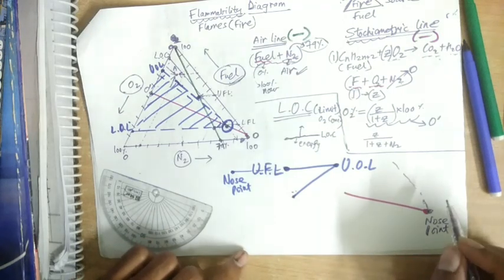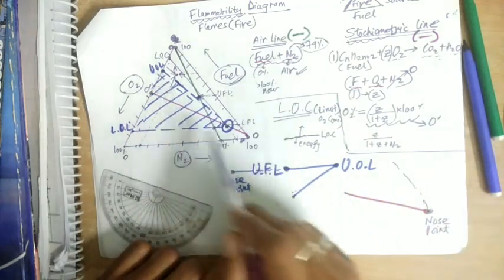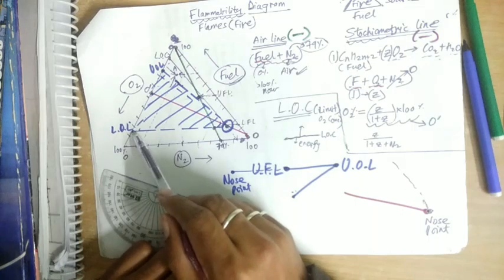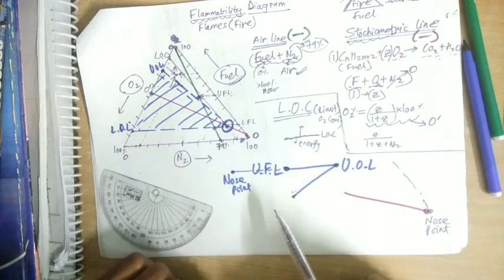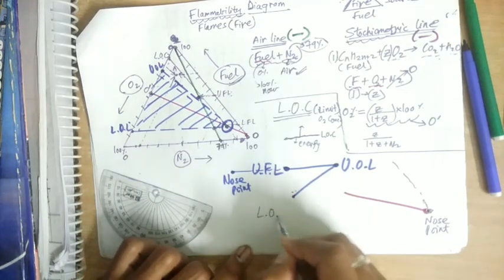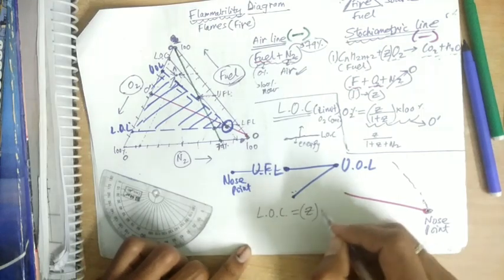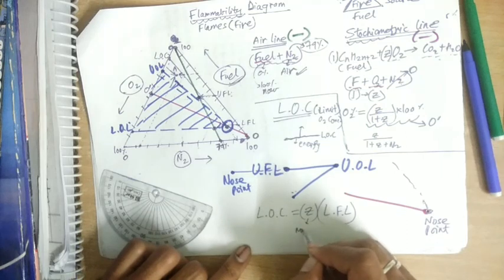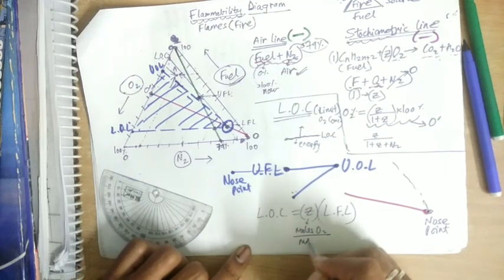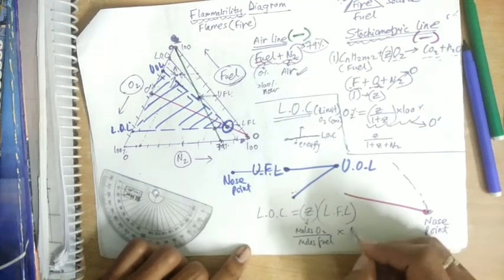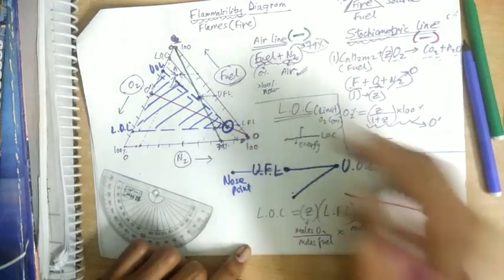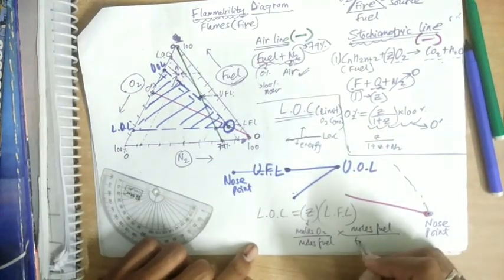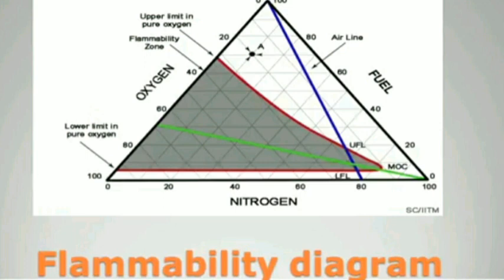At the nose point, UFL and UOL meet, and LFL and LOL also meet. An important relation is: LOC = z × LFL, where z is the moles of O₂ per mole of fuel from the stoichiometric equation, and LFL is the lower flammability limit expressed as moles of fuel per total moles.